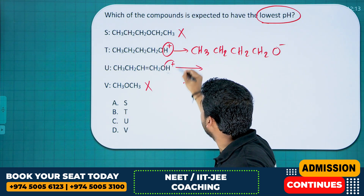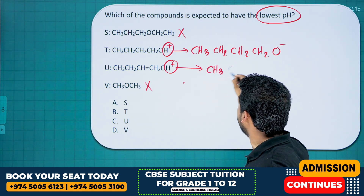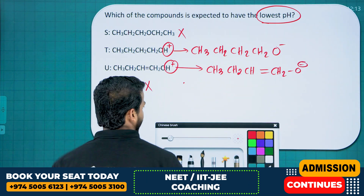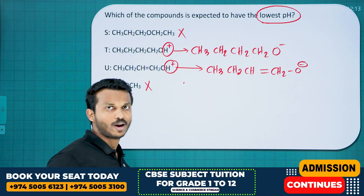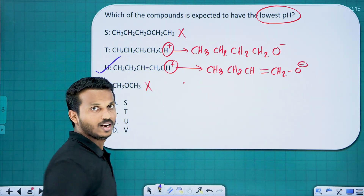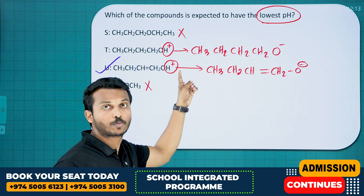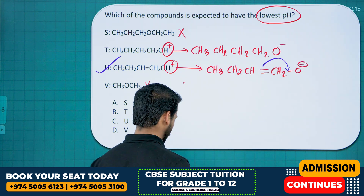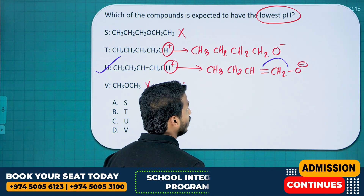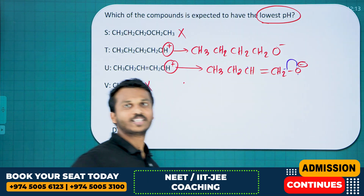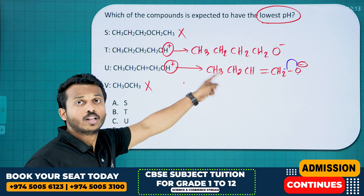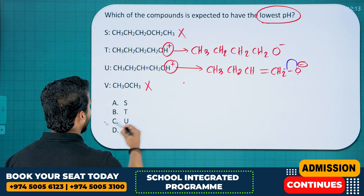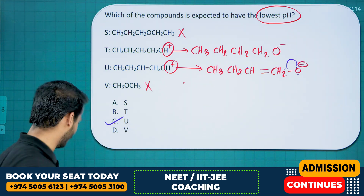And if the other compound loses H+, it also forms CH3CH2CH2CH2O−. The second one is more stable after losing H+ because of resonance — the oxygen lone pair allows resonance stabilization. Since the intermediate of the second compound is highly stable, it is more ready to lose H+, meaning it has greater acidity.